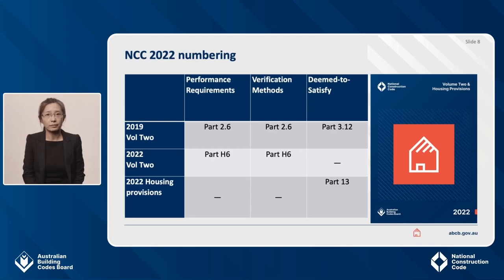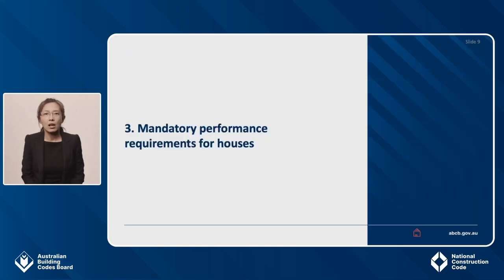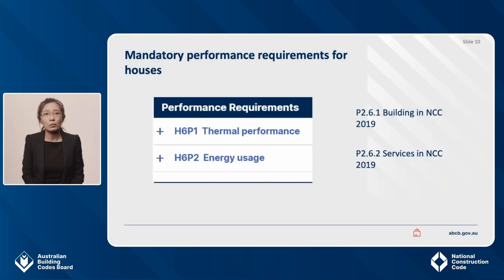In addition, as shown on screen in the table, DTS elemental provisions will be discussed in section 3 of NCC 2019. I will now get into specifics of the changes, starting with the mandatory performance requirements for houses. There are two mandatory requirements that determine the compliance level of energy efficiency for houses: H6P1 covering thermal performance, and H6P2 for energy usage.